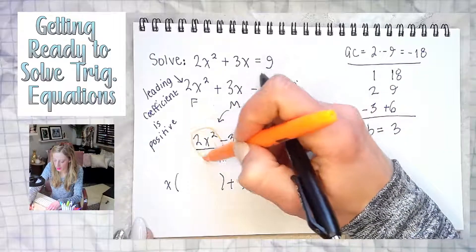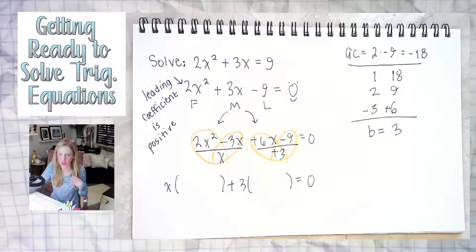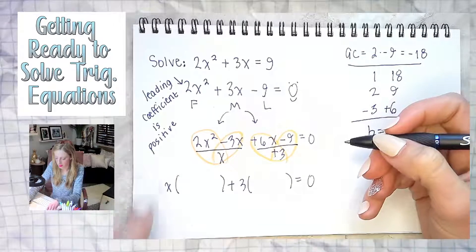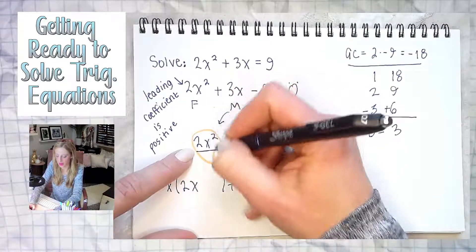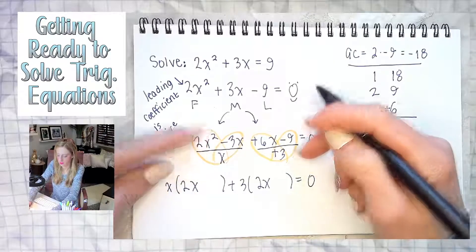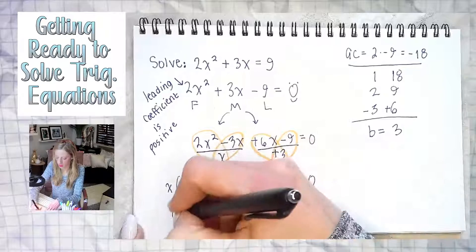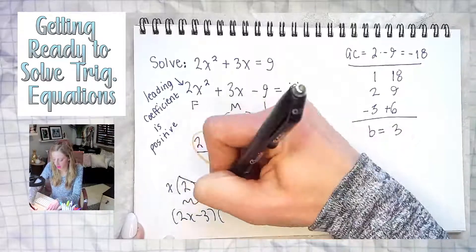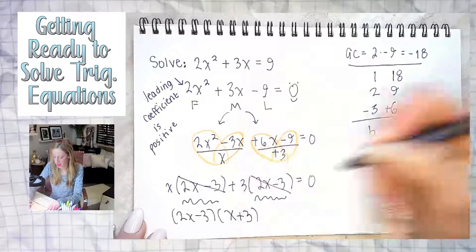We reduce with the pretzel because we have a plus or minus sign in the numerator. If they don't both reduce to the same thing, we either messed up or it's not factorable. Both pretzels reduce to 2x — because the x reduces but the 2 stays — and then minus 3. So the greatest common factor is 2x minus 3, which comes out front. What's left inside? X plus 3. Beautiful. X plus 3 — don't lose your equal zero.